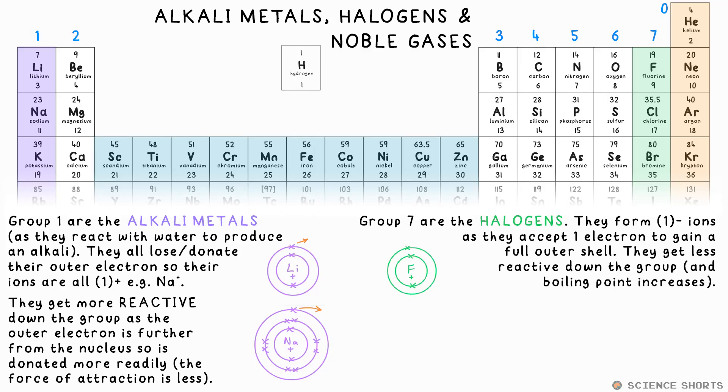Group 7 are what we call the halogens. They're essentially the opposite. They have 7 electrons in their outer shell, so they need one more electron to gain a full outer shell. The further down the group you go, the less readily an electron is accepted onto that shell that's further away from the nucleus, so they get less reactive down the group. Their boiling points also increase down the group.